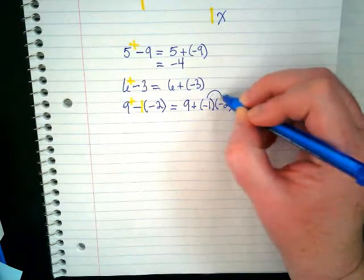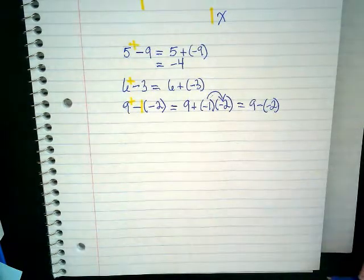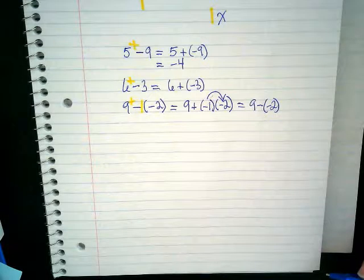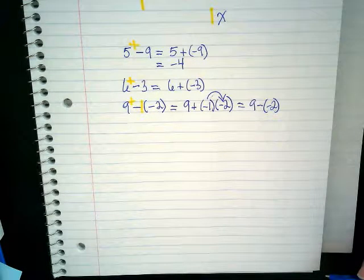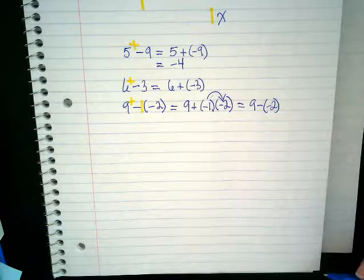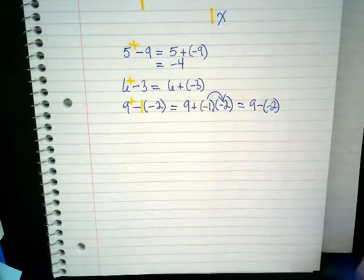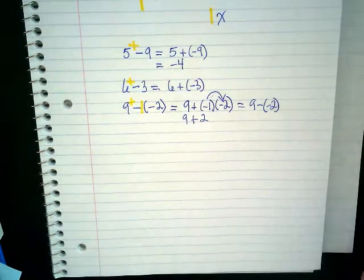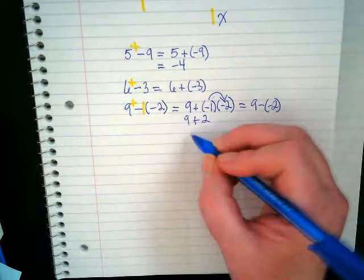I have to multiply negative one times negative two. If I multiply negative one times negative two, I'm multiplying two negatives, which means I'm going to get what? Positive. Nine plus two. What does it equal? Eleven.